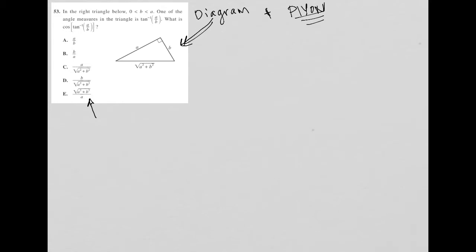The question says in the right triangle below, B is greater than zero and less than A. So I like to read from inside out - B is between A and zero. So B is positive but just not as large as A. A is bigger than B. One of the angle measures in the triangle is tan inverse A over B. First of all, let's look at SOHCAHTOA.